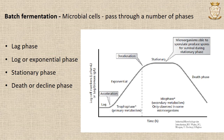Batch fermentation is a closed culture system which contains an initial limited amount of nutrients. The microorganisms will pass through a number of phases such as lag phase, log or logarithmic or exponential phase, stationary phase, and death or decline phase, as can be seen from the diagram.